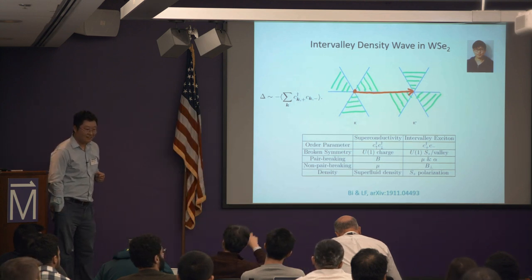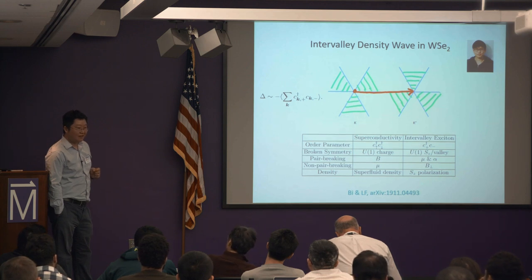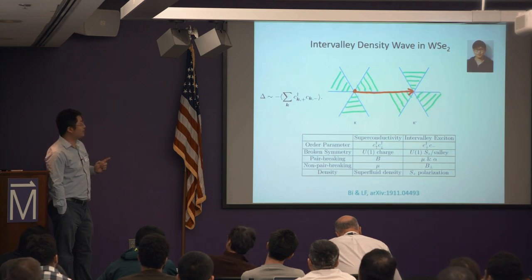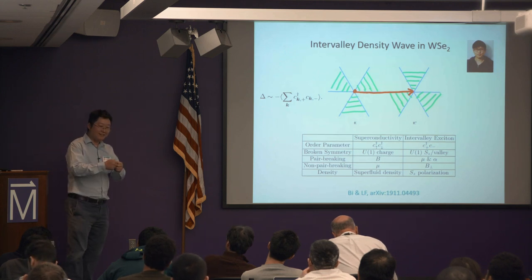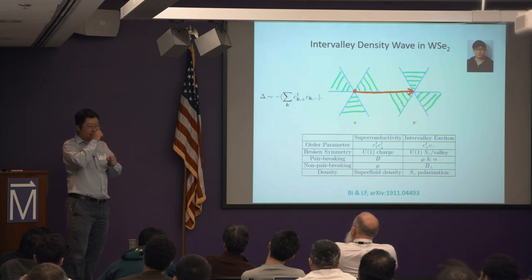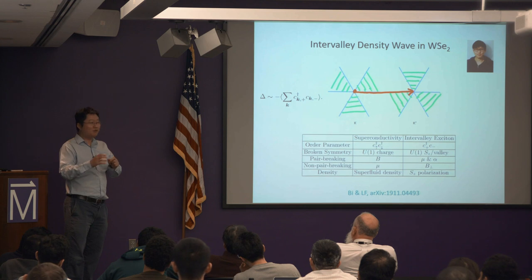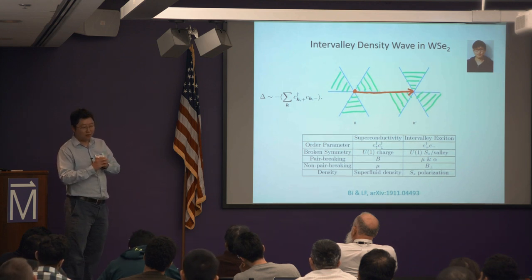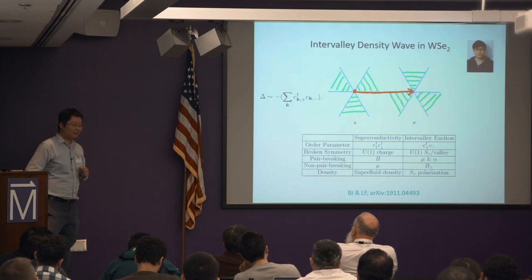[Question: What if the Van Hove singularity coincides with the energy extremum?] The classification I described assumes that the critical points are isolated. In the case of a Mexican hat potential, it's really a ring of critical points — that's a little bit fine-tuned, since in reality there are always some warping effects, though the warping can be at a very small energy scale. So far, everything I've been talking about assumes isolated critical points — I say 'points.'